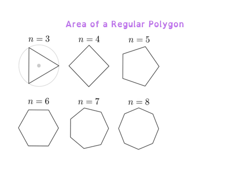Let me draw a picture to try and help you understand what I'm talking about. What you want to look at is the center of each of these shapes. The apothem is going to be the distance from the center of the polygon to one of the sides, and it's going to be perpendicular, creating a 90-degree angle.